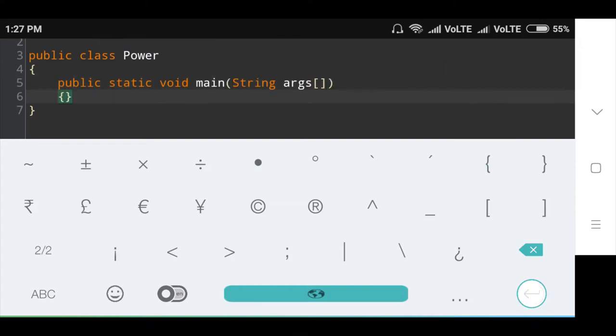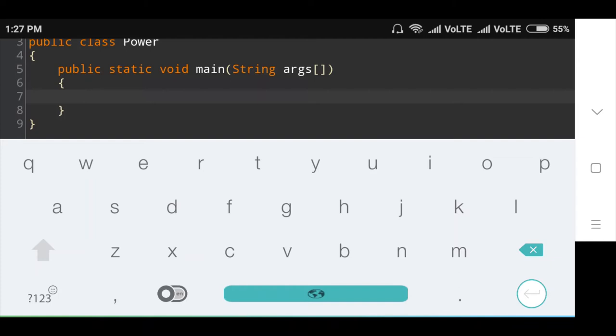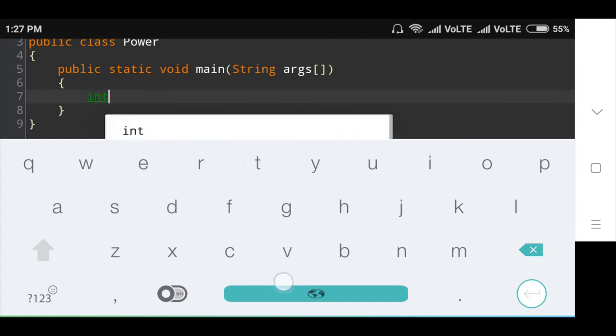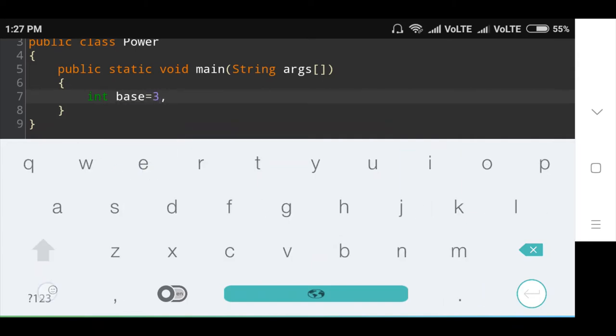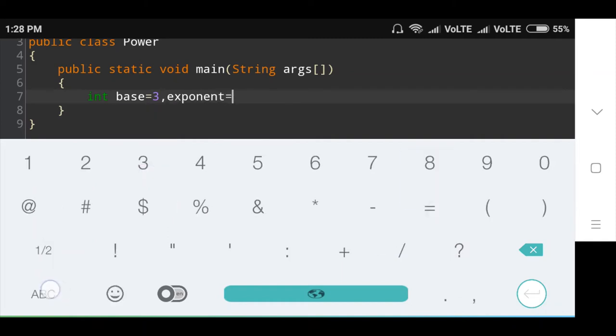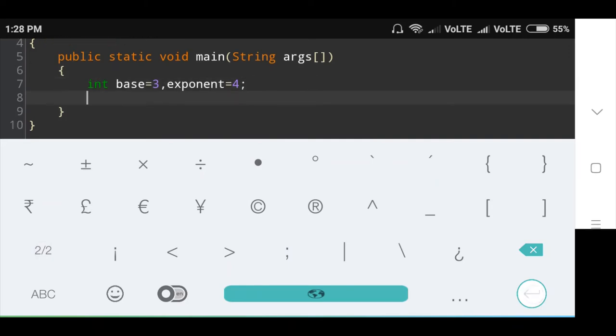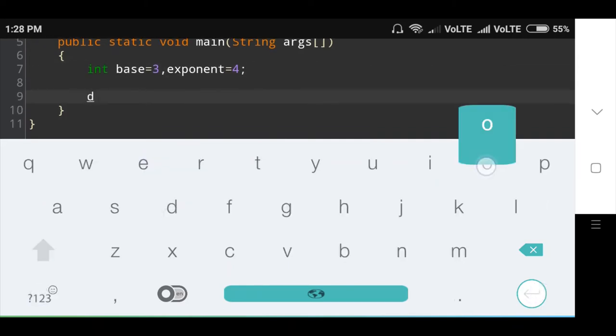Now I am declaring integer variables and assigning values. Int base equals 3, comma exponent equals 4, then semicolon. Here I will use double data type to print double value.